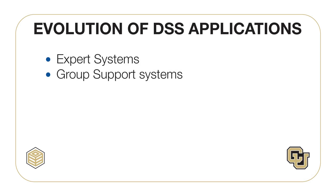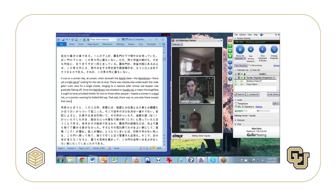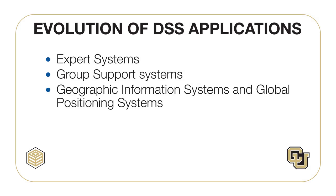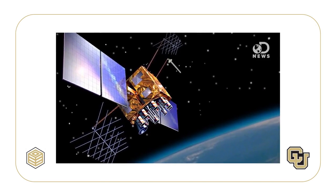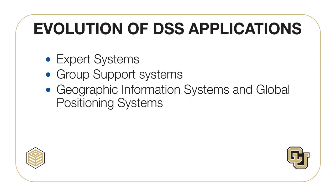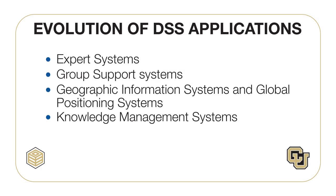Group support systems are used for idea generation, group writing, and record keeping. A conferencing system like GoToMeeting supports remote group decision-making where people no longer have to travel to participate in meetings. If you have ever used your mobile phone to locate a nearby bank, restaurant, or hardware store, you have used both geographic information systems and global positioning systems. GPS is standard in many new automobiles, and businesses use these systems to make marketing decisions that require knowing the exact demographics of a given location.